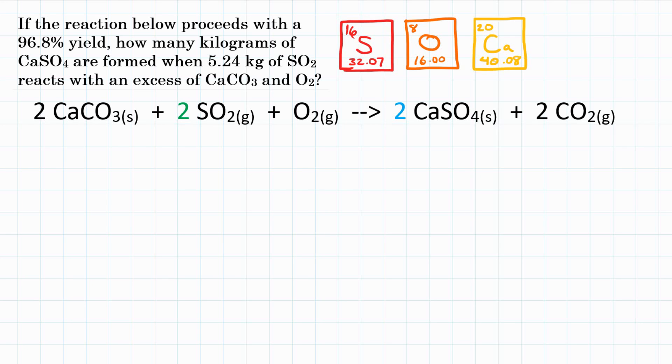Alright everyone, if the reaction below proceeds with a 96.8% yield, how many kilograms of CaSO4 are formed when 5.24 kilograms of SO2 reacts with an excess of CaCO3 and O2?